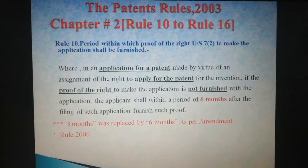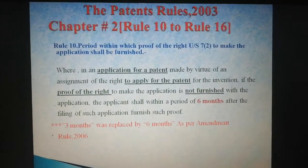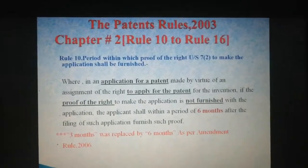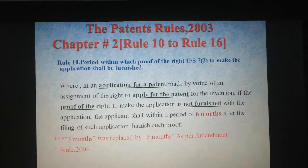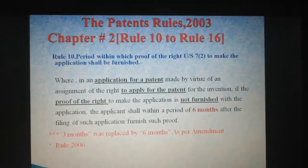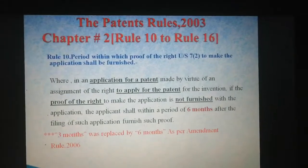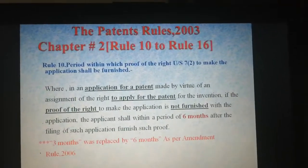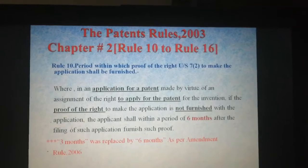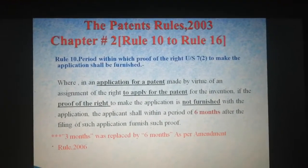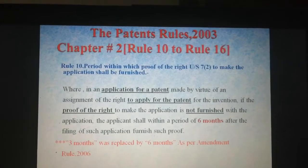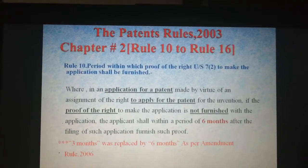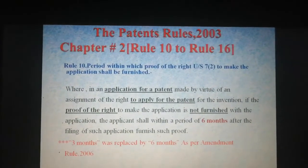The meaning is that when a patent application is made by virtue of an assignment of the right to apply for the patent, there should be a proof of right. If that proof of right is not furnished along with the application, then the applicant gets a period of 6 months to furnish the proof within 6 months after the filing of such application.